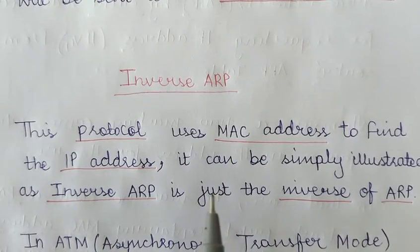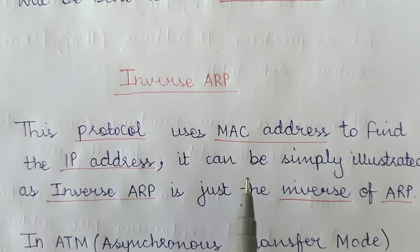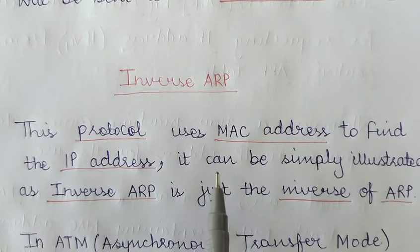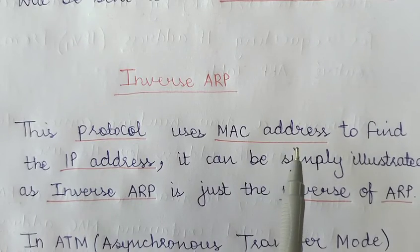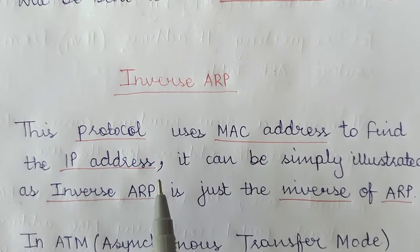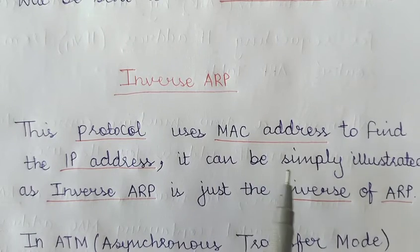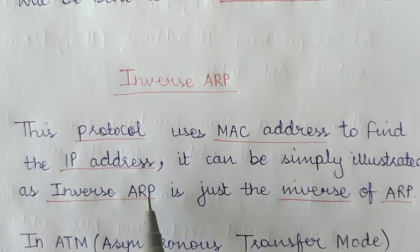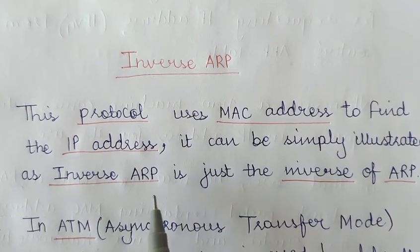Inverse ARP does the opposite: it uses the MAC address to find the IP address, which is just the inverse of ARP. Hence it is also known as inverse ARP because it is simply the opposite of ARP.